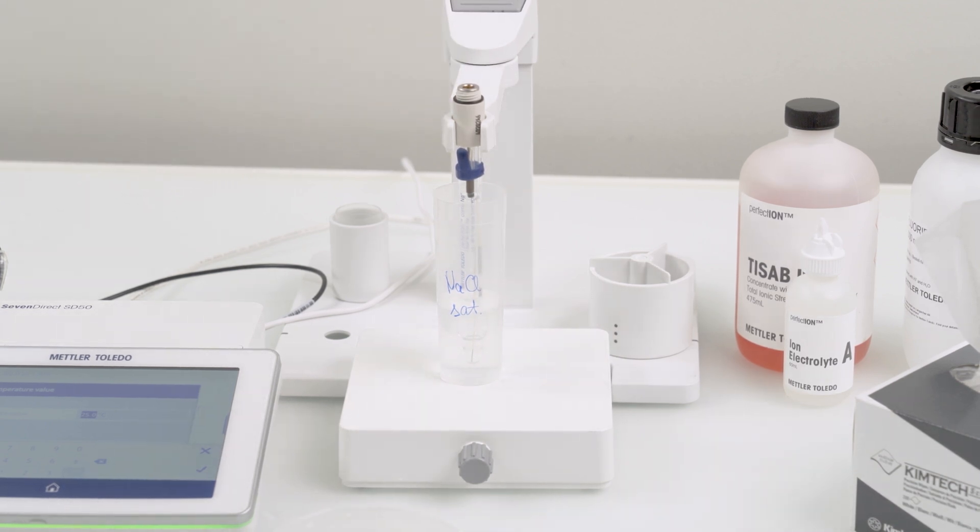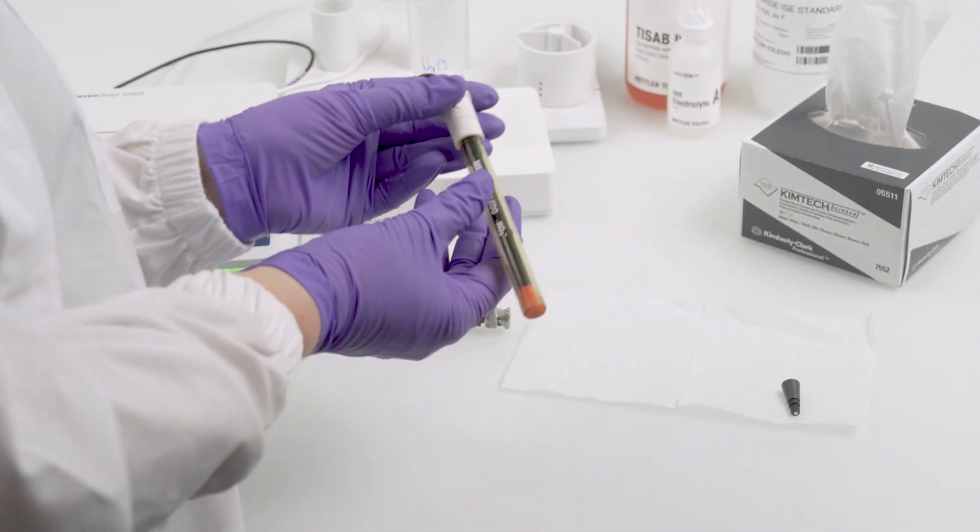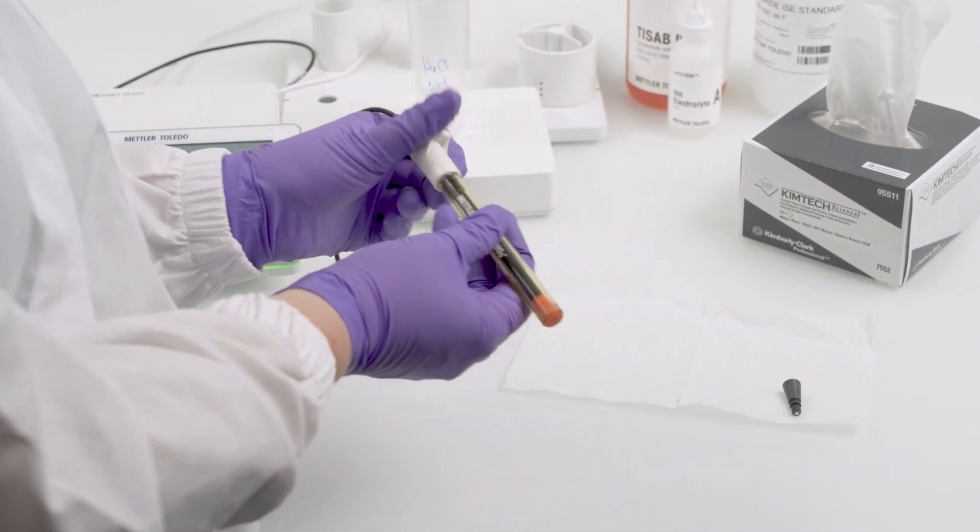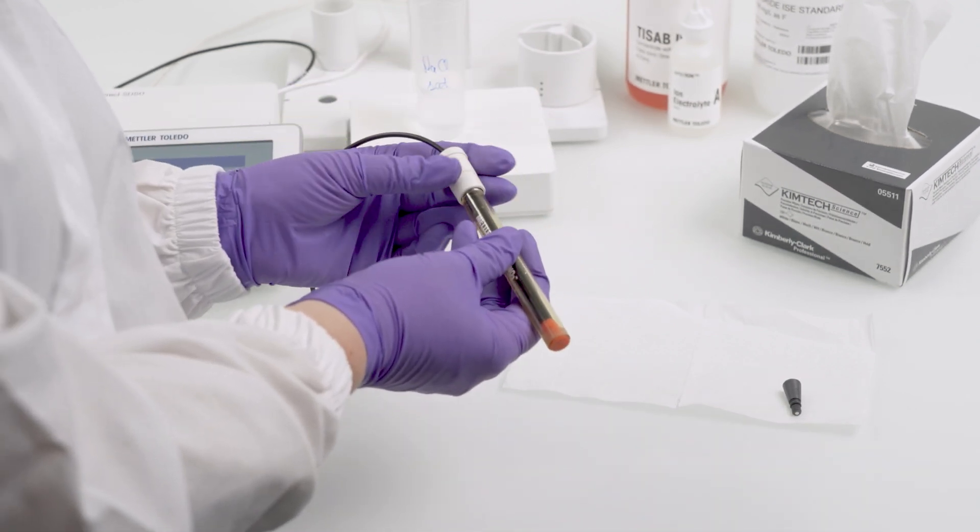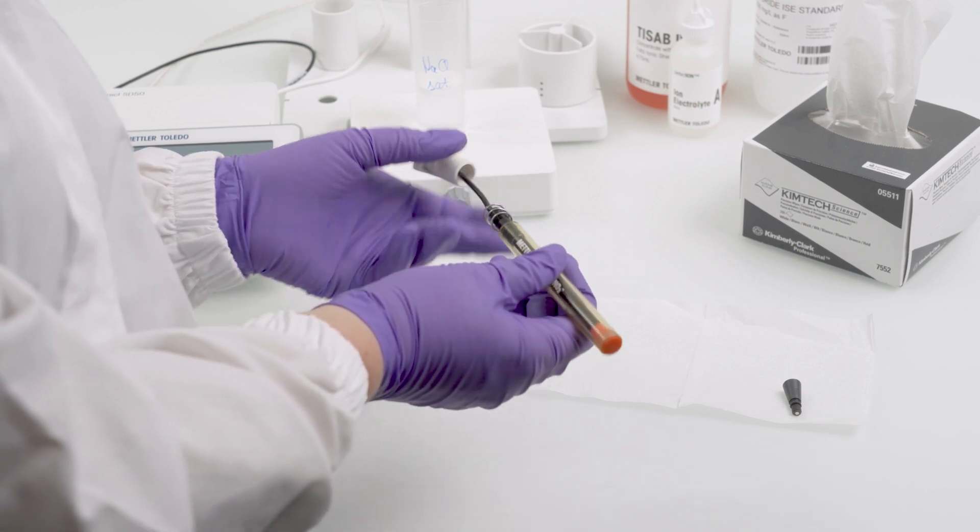After regeneration, always perform a calibration. If the calibration is still unsuccessful, consider replacing the membrane instead of buying a new electrode. Replacing the membrane is a less costly option that could fix the problem.